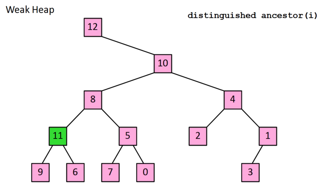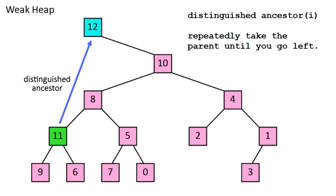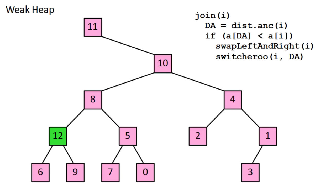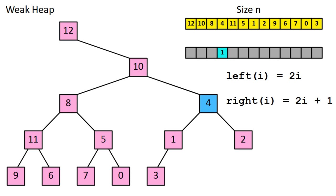Each node has an associated node called its distinguished ancestor. To find it, you repeatedly take the parent until you end up going left. There's an operation called join, where given a node i, you find its distinguished ancestor, and if that value is smaller than the one at i, you swap the left and right subtrees of i, then swap the values of i and its distinguished ancestor. Swapping the subtrees is extremely easy, you just flip the corresponding value in the boolean array.